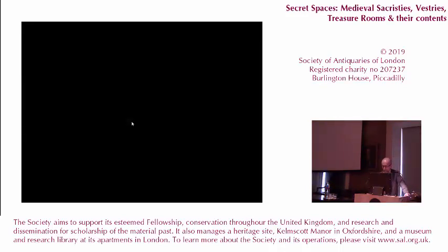The most sumptuous complex of chapter buildings built during the Spanish Renaissance includes a series of dependencies among which was the sacristy and the living quarters of the treasurer, protected with a spiral staircase designed for firearms. How did these sacristy-treasuries look? We would not be mistaken to think of these as cabinets of curiosities, containing everything from relics and liturgical objects to books and vestments.